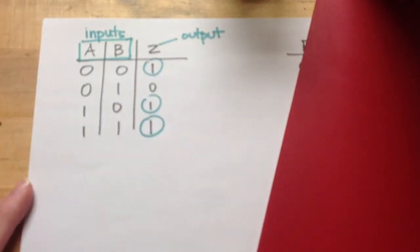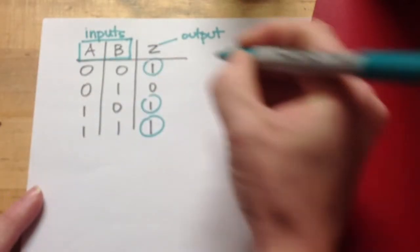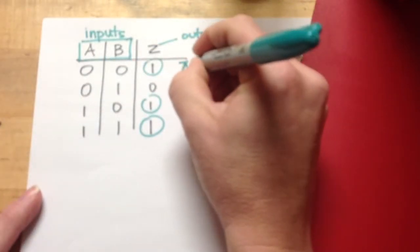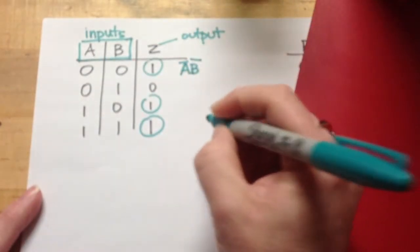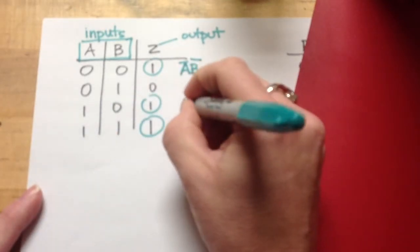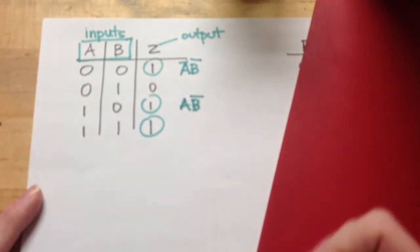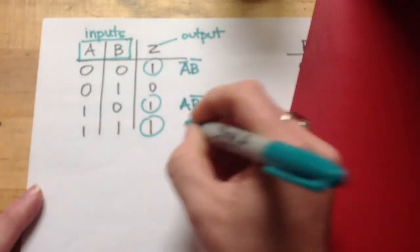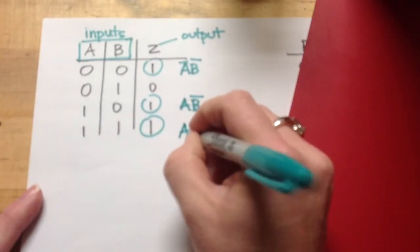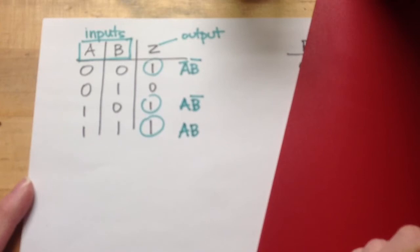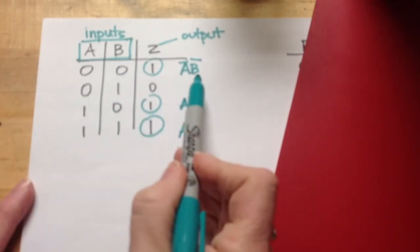So the term for that first line would be not A, not B. The term here would be A, not B. And the term here would be A, B.